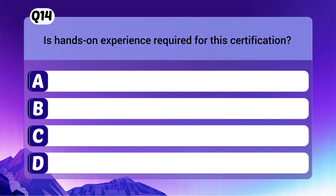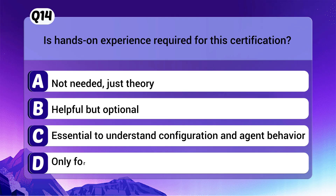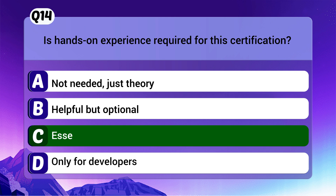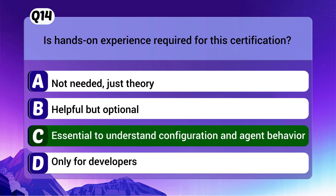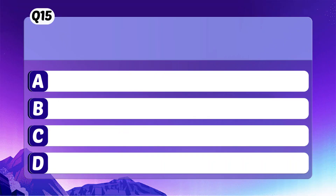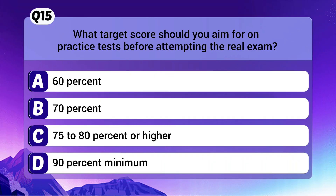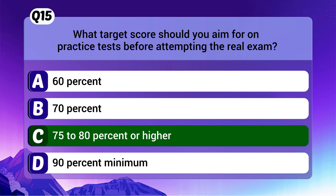Question 14: Is hands-on experience required for this certification? The correct answer is C: It's essential to understand configuration and agent behavior. Question 15: What target score should you aim for on practice tests before attempting the real exam? The correct answer is C: 75 to 80% or higher.